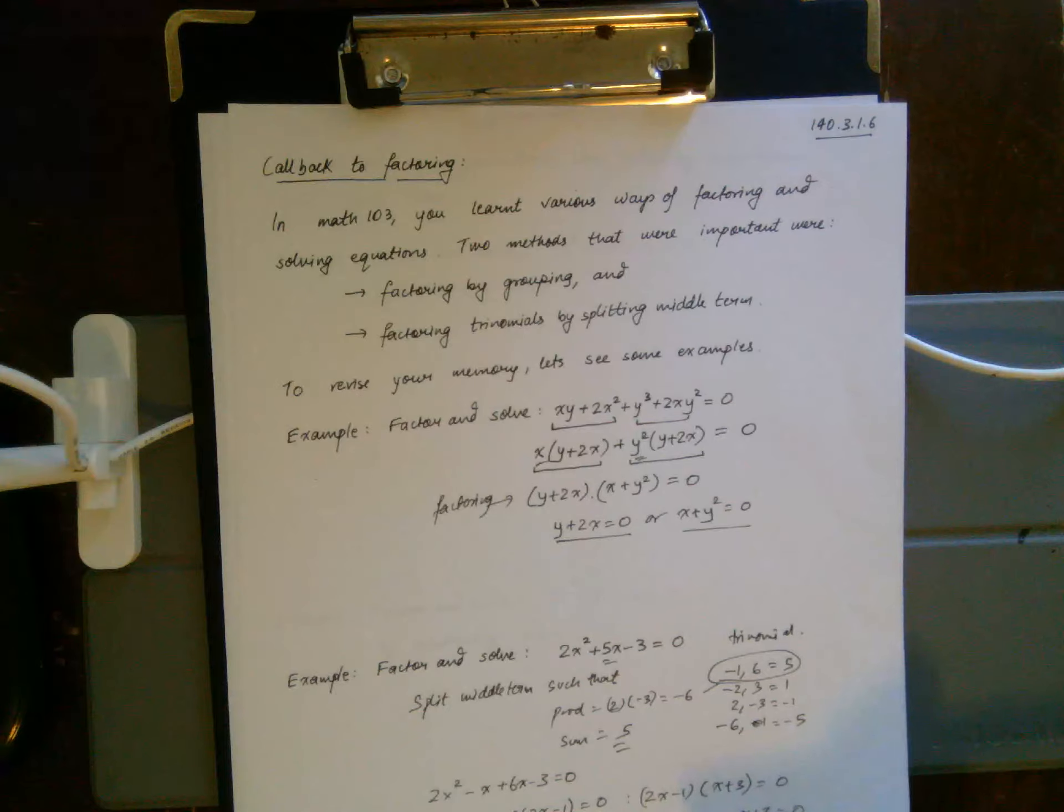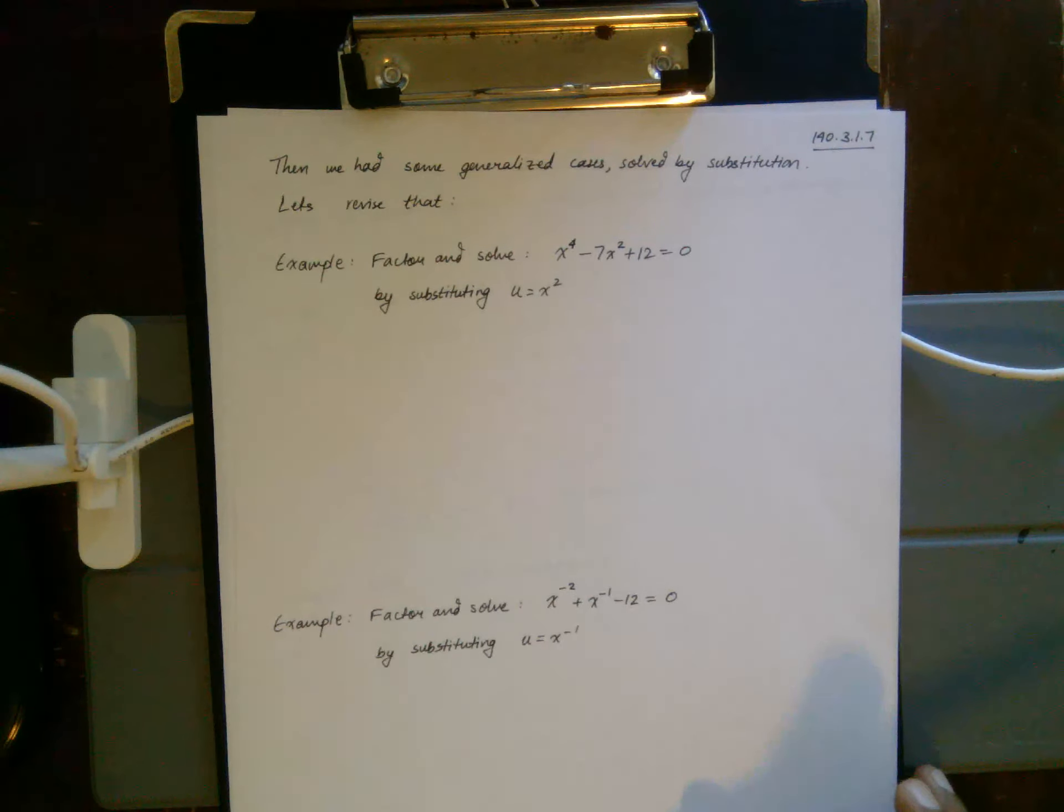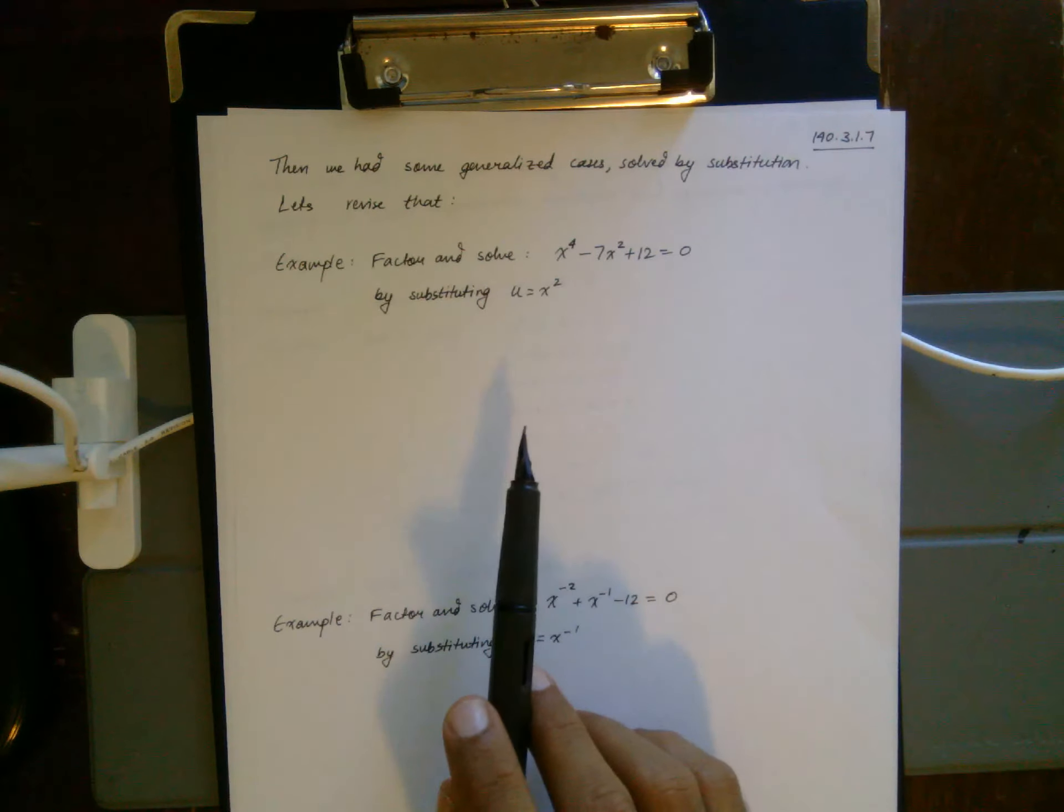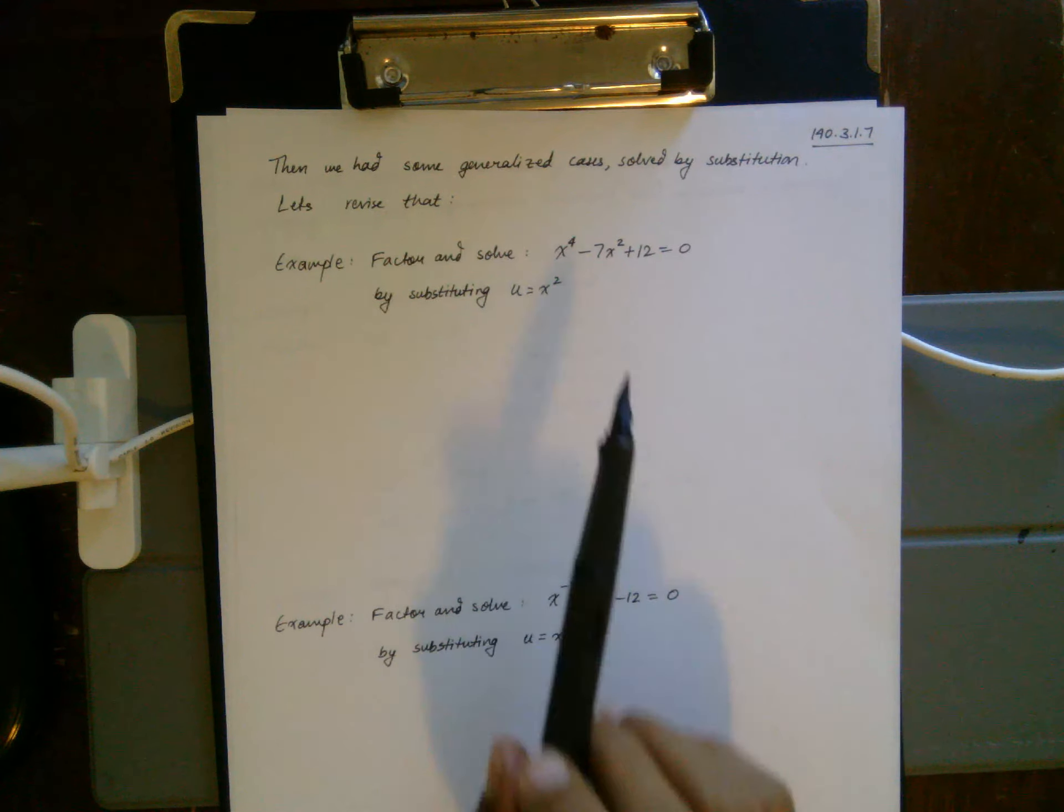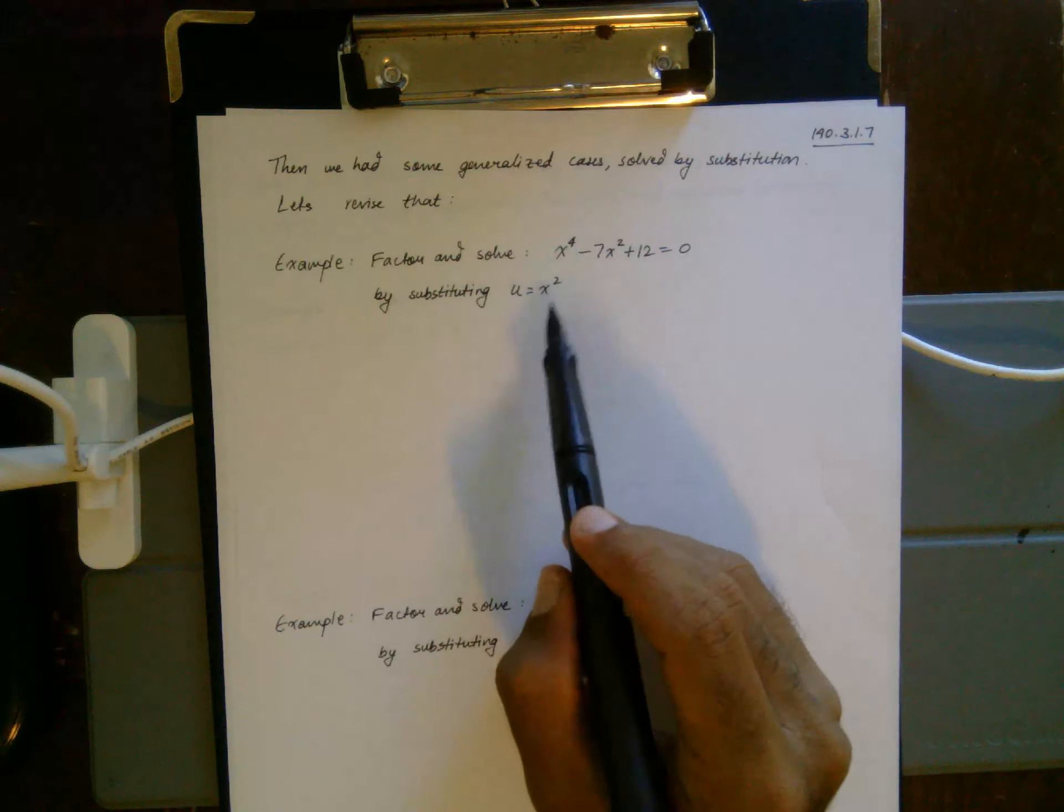Then we have some generalized cases which you can solve by substitution. Let's revise that. Here, this is not quadratic—meaning the power is not 2, the power is 4—but you can substitute u equals x² to make this equation u² minus 7u plus 12 equals 0.